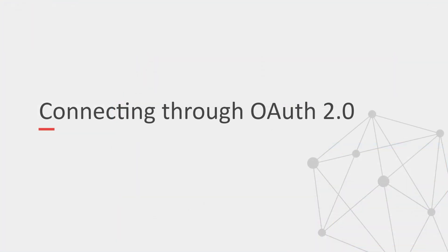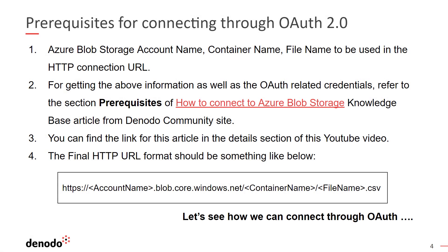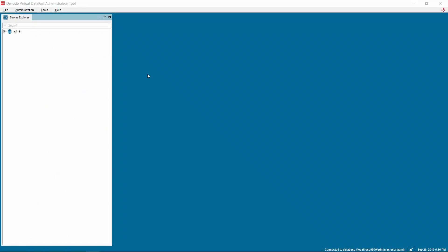Alternatively, let us see how to connect Azure Blob Storage using the OAuth 2.0 authentication mechanism. There are some prerequisites, like getting the storage account name, container name, and the file name that you want to read from Azure Blob. You can get these as well as OAuth-related credentials by following the steps elaborated in the Knowledge Base article. You can find the link for this article in the details section of this YouTube video. Once the prerequisites are ready, the final HTTP URL should be something like this.